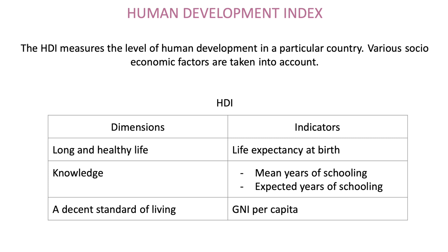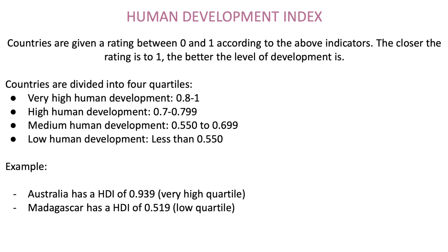The Human Development Index measures the level of human development in a particular country, taking into account various socio-economic factors. There are three dimensions: a long and healthy life, measured by life expectancy at birth; knowledge, measured by mean years of schooling and expected years of schooling; and a decent standard of living, measured by GNI per capita. Countries are given a rating between zero and one — the closer the rating is to one, the better the level of development.